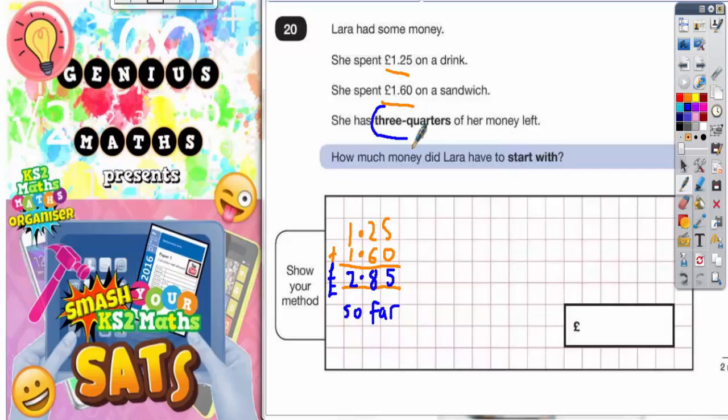Now it does say that she's got three quarters of her money left. Now this is the clever bit. If we just draw a little circle here and split it into quarters, three quarters of it are what she's got left. So we'll shade the three quarters in blue. And the one quarter must be what she's spent so far.